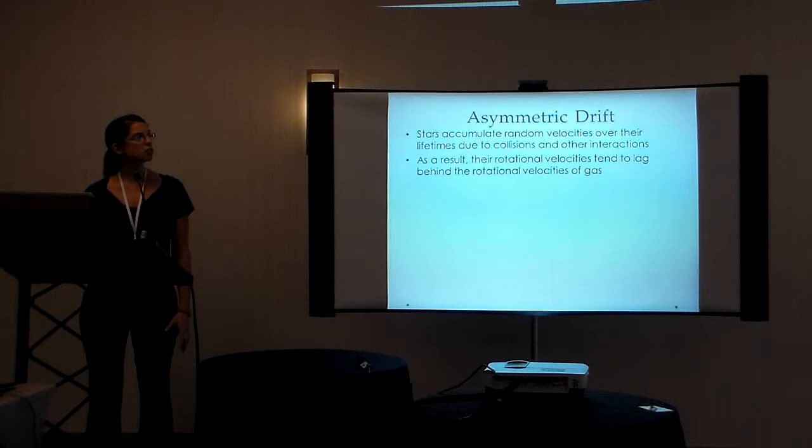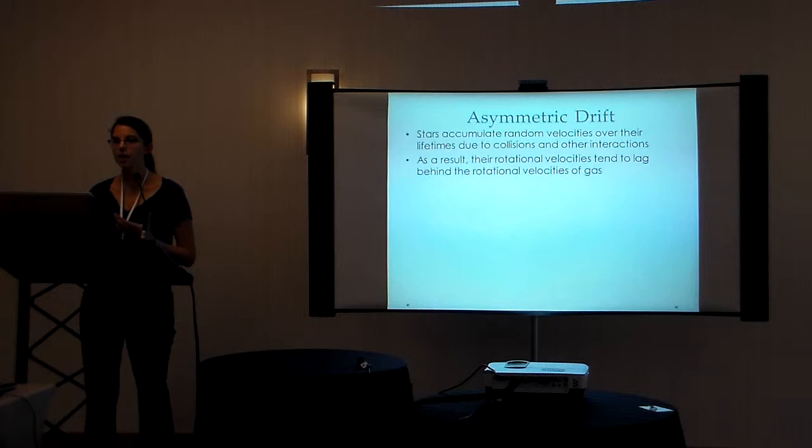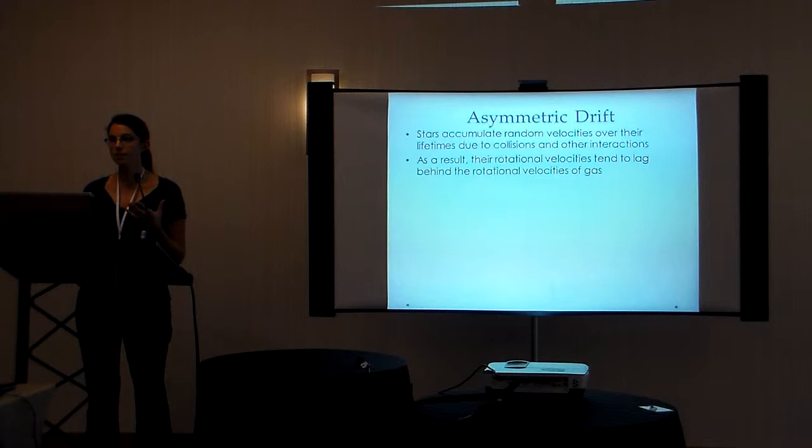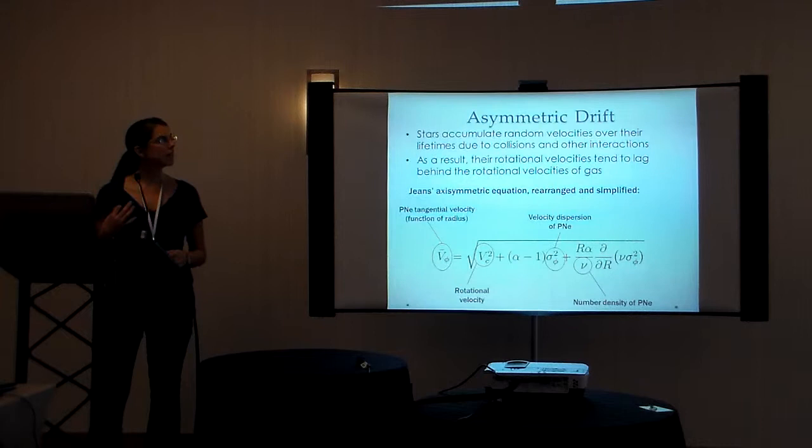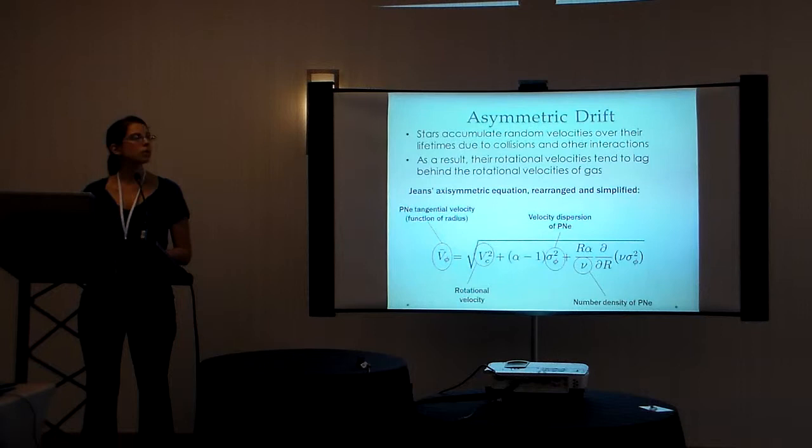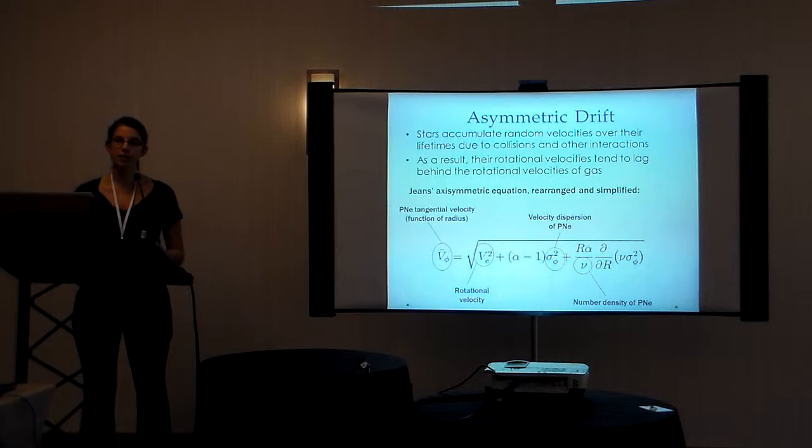So asymmetric drift is a phenomenon where stars accumulate random velocities over their lifetime due to collisions and other interactions with stars and other massive bodies. And as a result of these collisions, their rotational velocities tend to lag behind the rotational velocities of the gas in the galaxy. And we can actually calculate the effects of asymmetric drift using the Jeans axisymmetric equation, which I've shown here in a rearranged and simplified form.